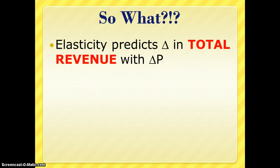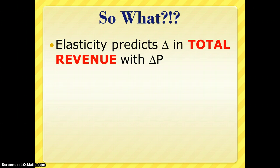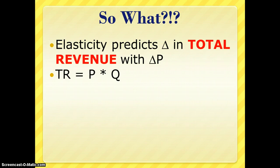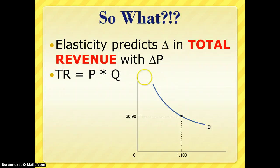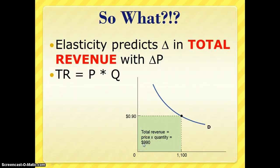So what does this mean practically? We can use this information to understand what happens to total revenue when there is a change in price. Elasticity predicts whether the amount of money coming in as a result of sales will be greater or smaller depending on the change in price. Total revenue is defined as price times quantity — how much money is coming in from sales. In our example, total revenue at the first point is 1,100 units times $0.90, giving total revenue of $990.